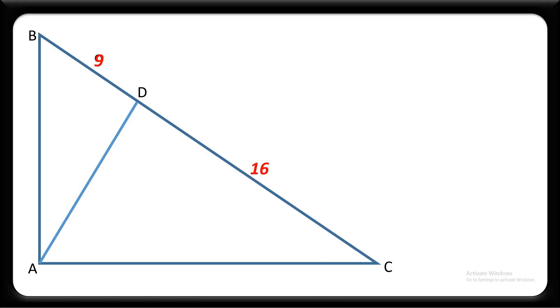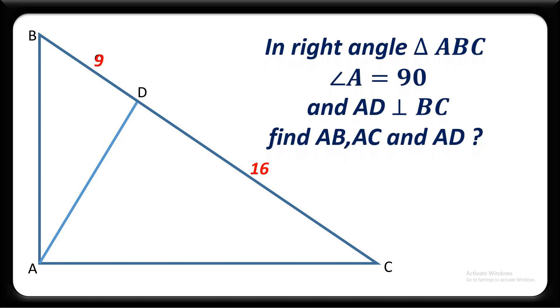Hello mathematician, try to solve a very beautiful geometry problem. In the diagram we have the value of BD and CD. The question is: in right angle triangle ABC, angle A equals 90 and AD perpendicular to BC, find AB, AC, and AD.